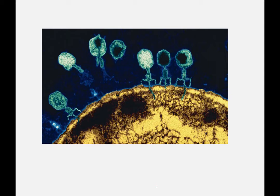This electron microscope picture has been false-colored. All these little green objects are bacteriophage on the outside of the bacterial cell. You can see here the phage is actually injecting its DNA into the cell, and then the protein capsid head is released as an empty head — it has no more use.